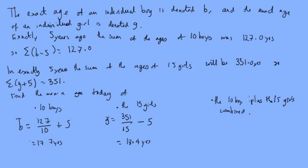Now here, we're going to combine the data. So we take sigma b plus sigma g over the total number of young people, which is 10 plus 15, which is going to be 177 plus 276 all over 25. And that equals 18.12 years.